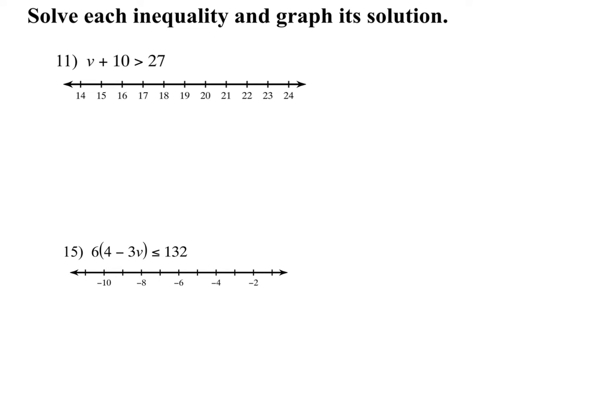We had one step, we had distribution and solving, compound and solving — make sure you know how to do all of those. For something like this first one, remember this is not an absolute value; you're just doing what it says. Make sure you solve it somewhere so you can check your numbers. This is just a one-step: subtract 10 from both sides, I'm left with V, and 27 minus 10 gives me 17. To graph it, find 17, open circle because it's not or equal to, and my variable is larger than 17, so graph all numbers bigger than 17.